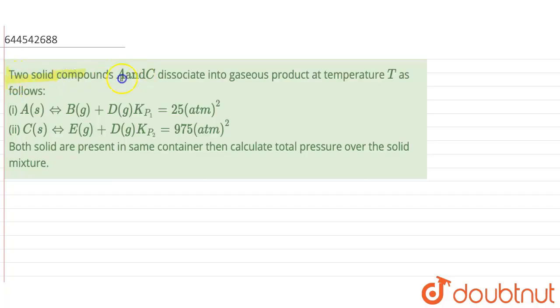It is given two solid compounds A and C dissociate to gaseous products at temperature T. The products we are getting: B and D from dissociation of solid A, and the Kp1 value is given as 25 atmosphere square. C solid dissociates to E gas plus D gas, giving Kp2 value as 975 atmosphere square. It is said that both solids are present in same container, then calculate the total pressure over the solid mixture.